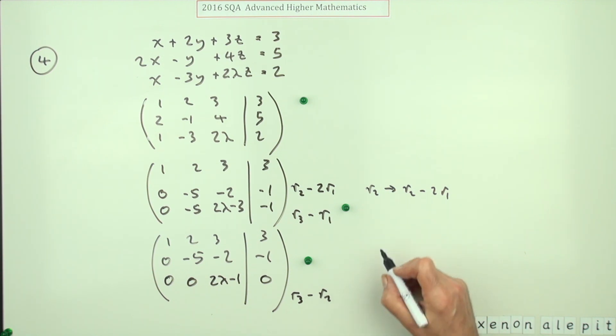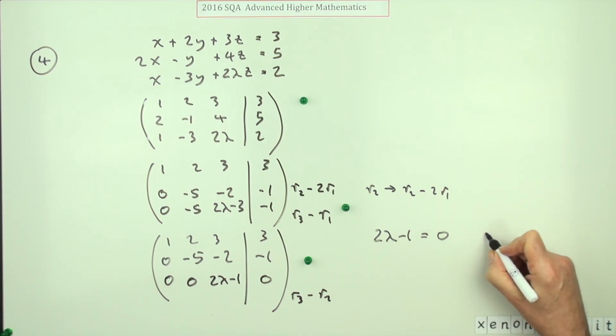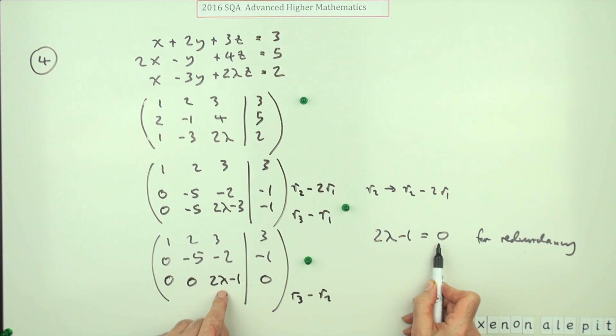Now I think forming that gives you the third mark, and then you have to still make the final part, which is two lambda minus one equals zero. Maybe I should have said 'for redundancy,' because after all, if it were equal to some other number here apart from zero, that would be an inconsistency, so there'd be no solutions. Which then leads to lambda equals, as before, a half for the final mark.